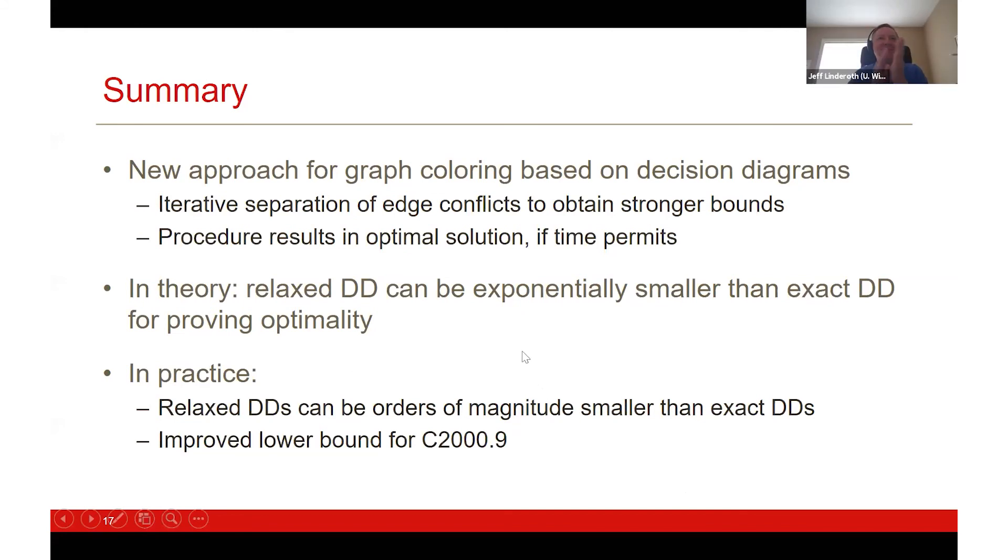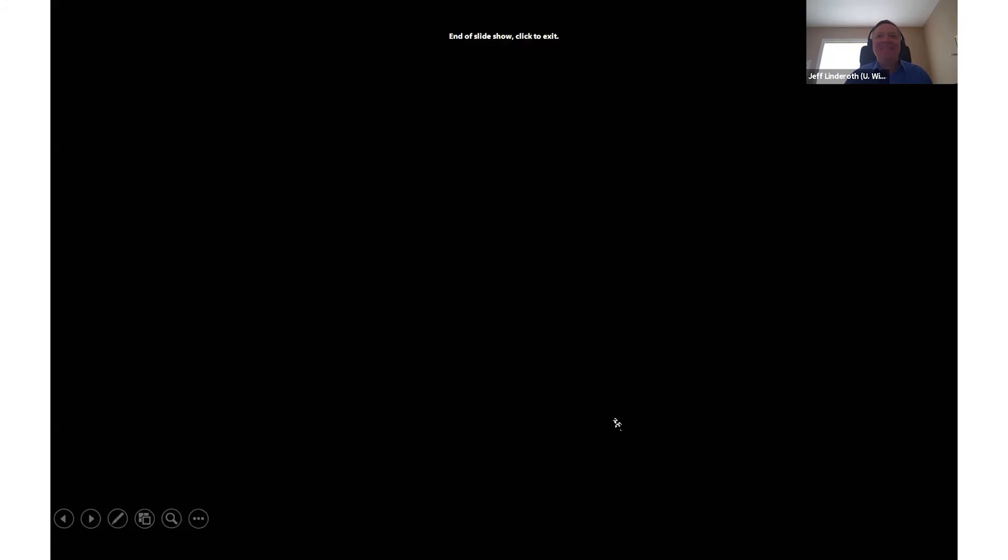Thank you for your attention. [Applause] Question: do you use a heuristic to determine a vertex ordering before constructing the decision diagram? Yes. I maintain a score based on connectivity with the already-selected set of vertices, and I use maximum degree as a tiebreaker. The vertex ordering is extremely important for this application.